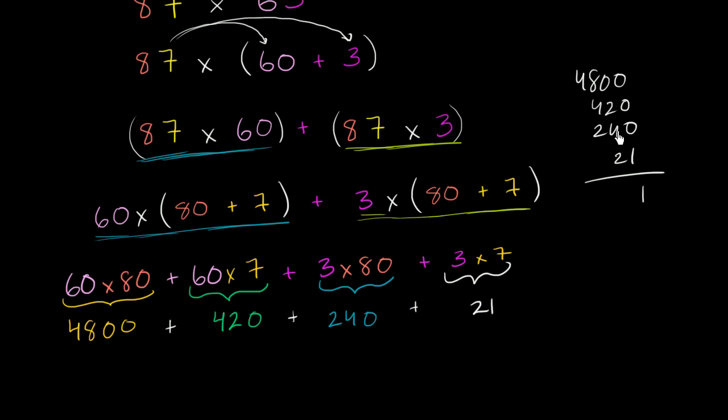Well, you're going to get a 1 here. Let's see, 20 plus 40 plus 20 is 80. Let's see, 800 plus 400 is 1,200 plus 200 more is 1,400. And so you get 5,481, it's equal to 5,481.